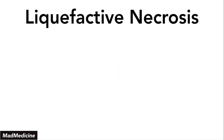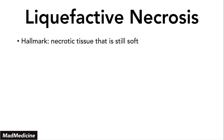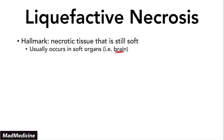Now we're going to talk about liquefactive necrosis. Liquefactive necrosis is a type of necrosis where the tissue is going to be soft — very soft. The name gives it away: it's like liquid, soft and squishy. Usually this is going to occur in the opposite of coagulative necrosis — instead of happening in solid organs, it occurs in soft organs like the brain. Your brain is really soft and squishy, so this is what happens in the brain.